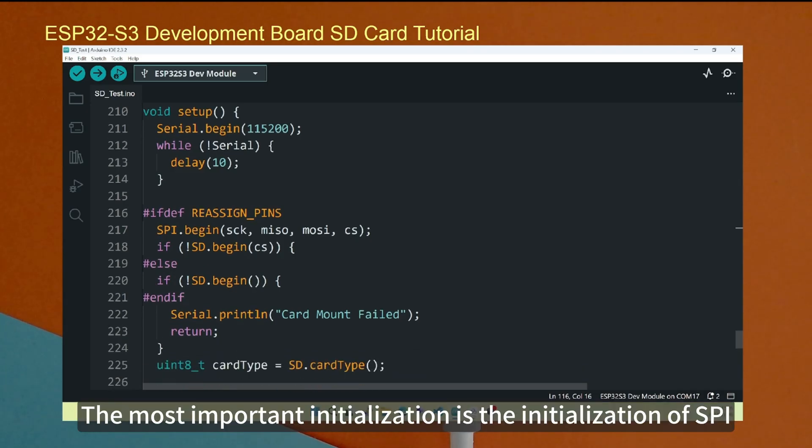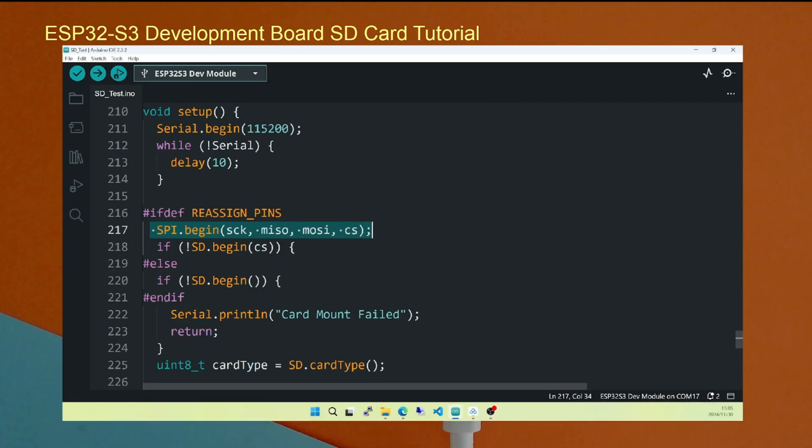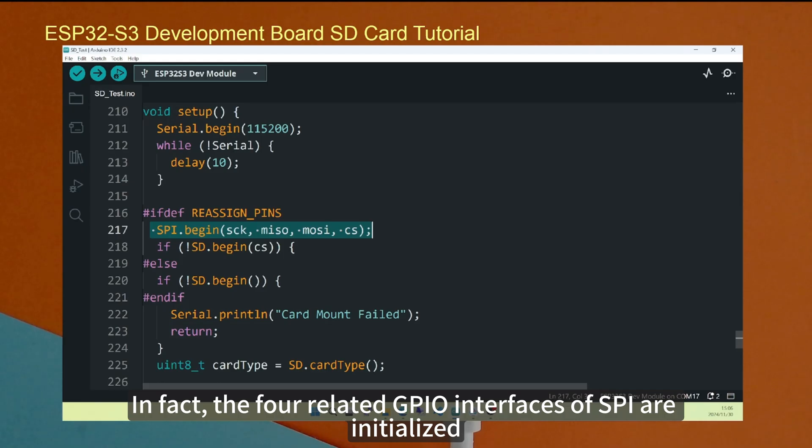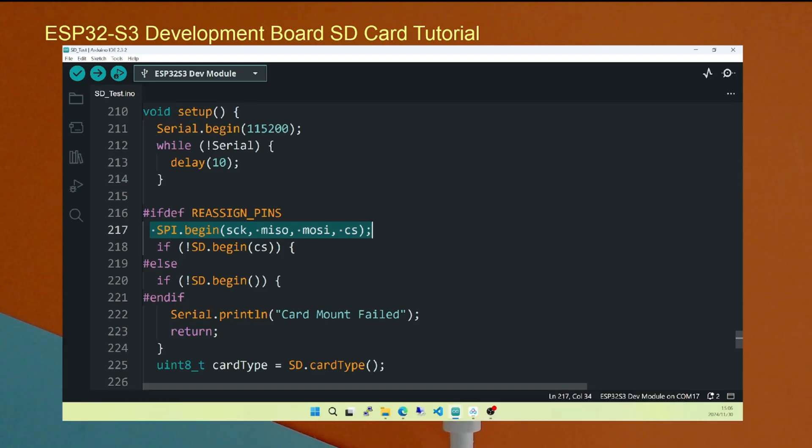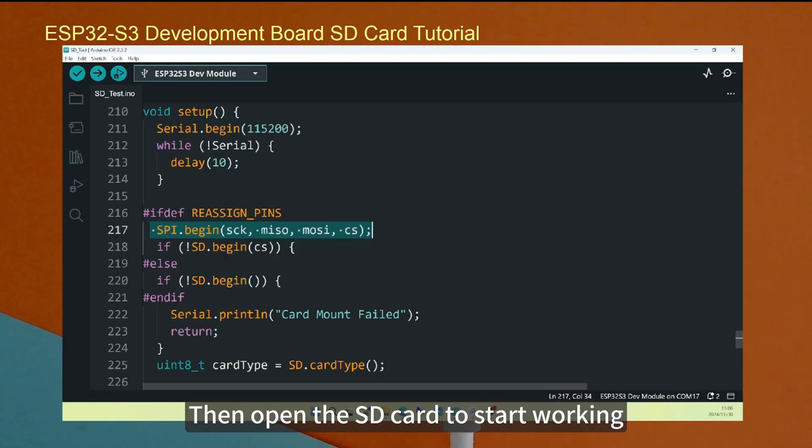You can see, the most important initialization is the initialization of SPI. In fact, the four related GPIO interfaces of SPI are initialized. Then open the SD card to start working.